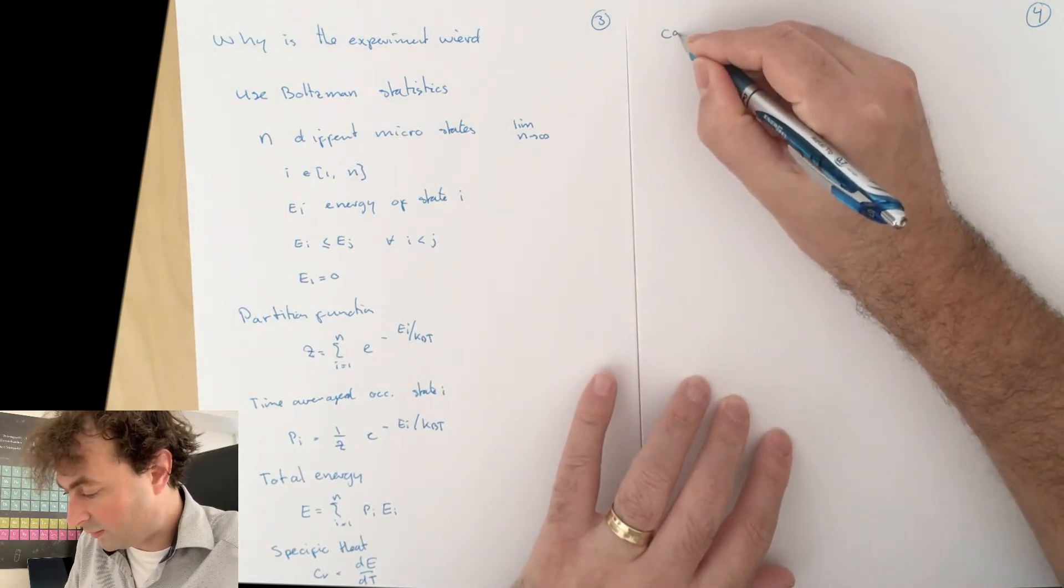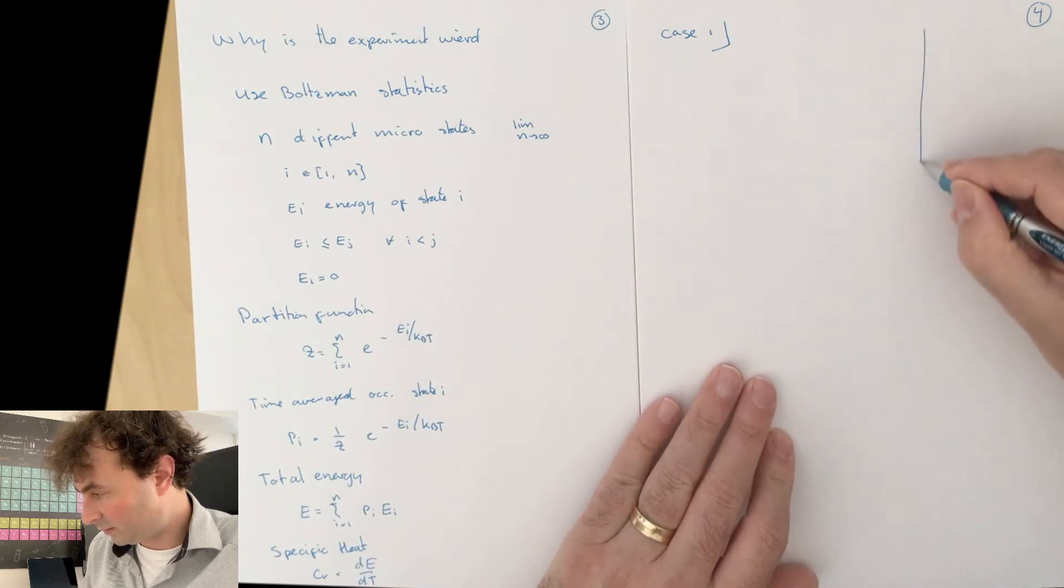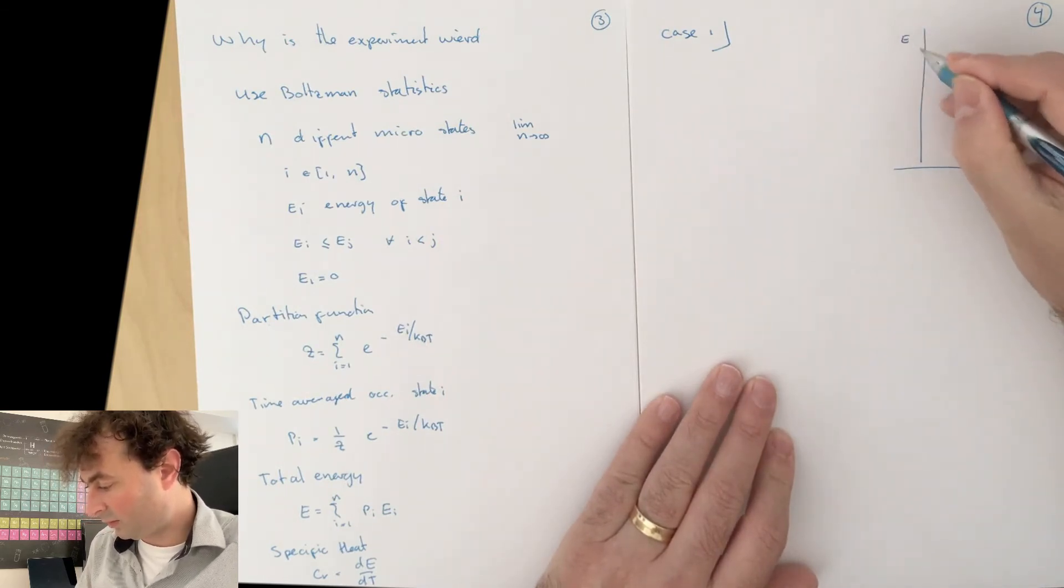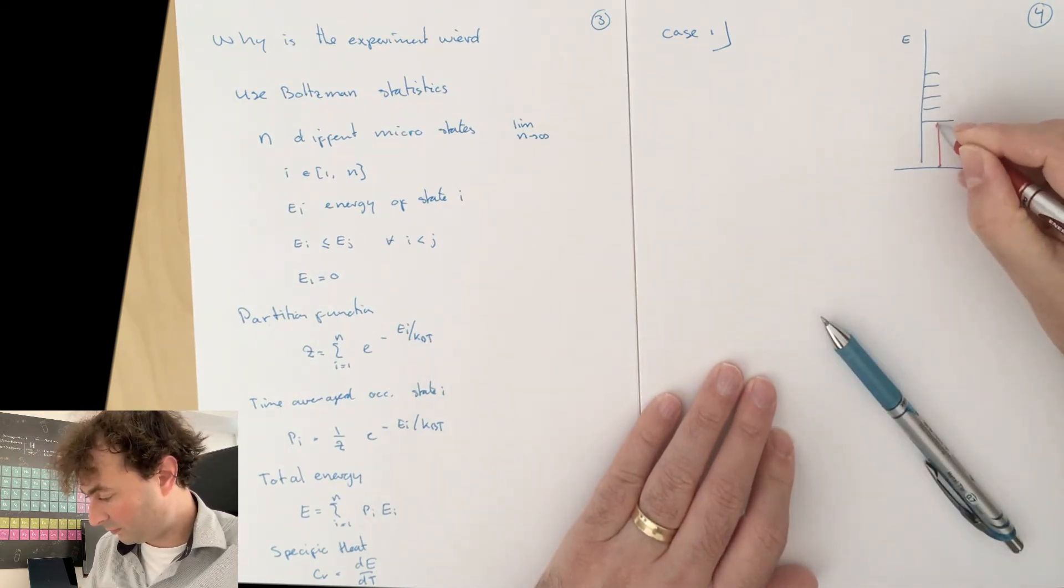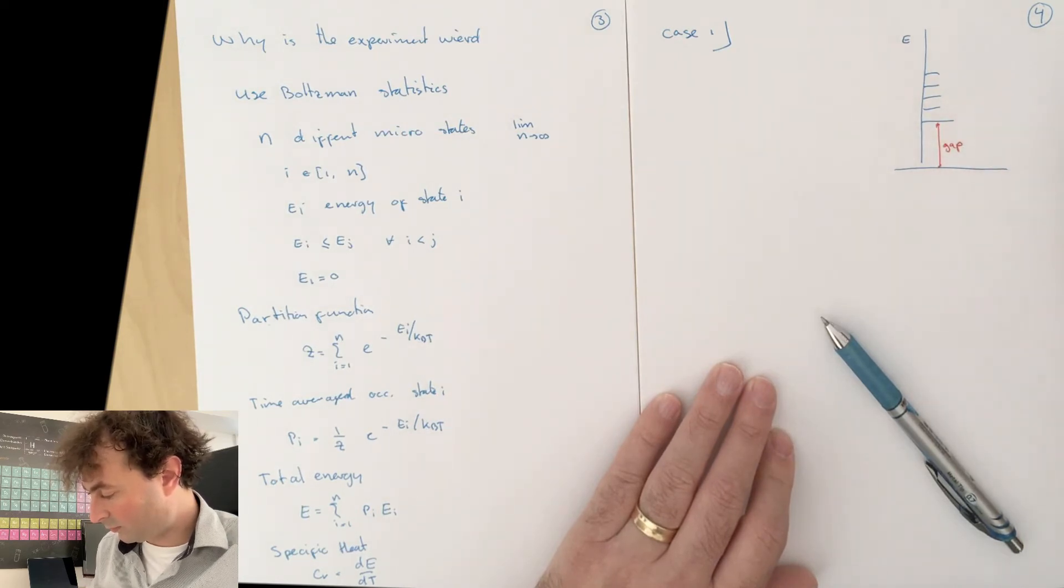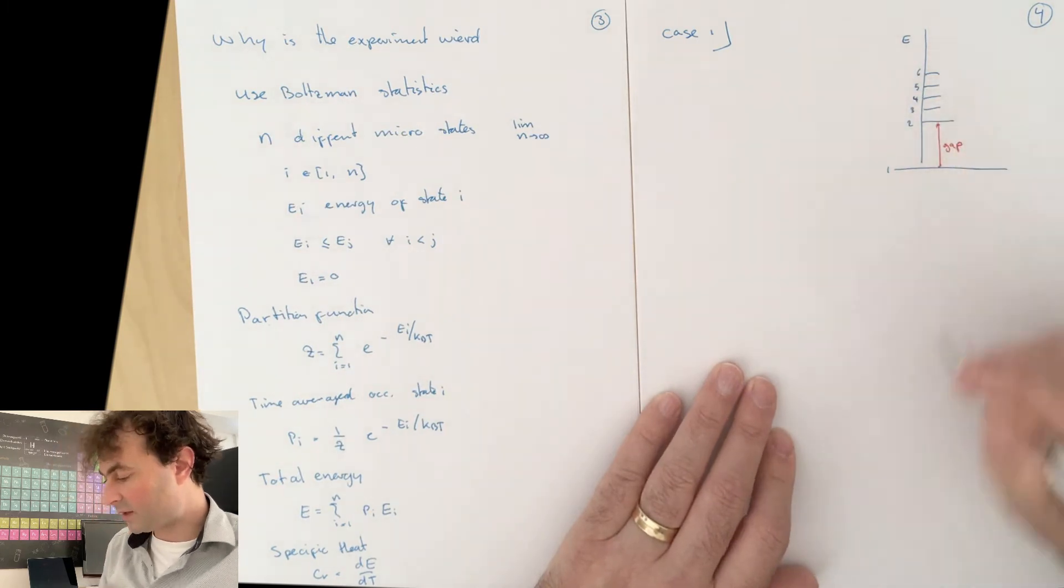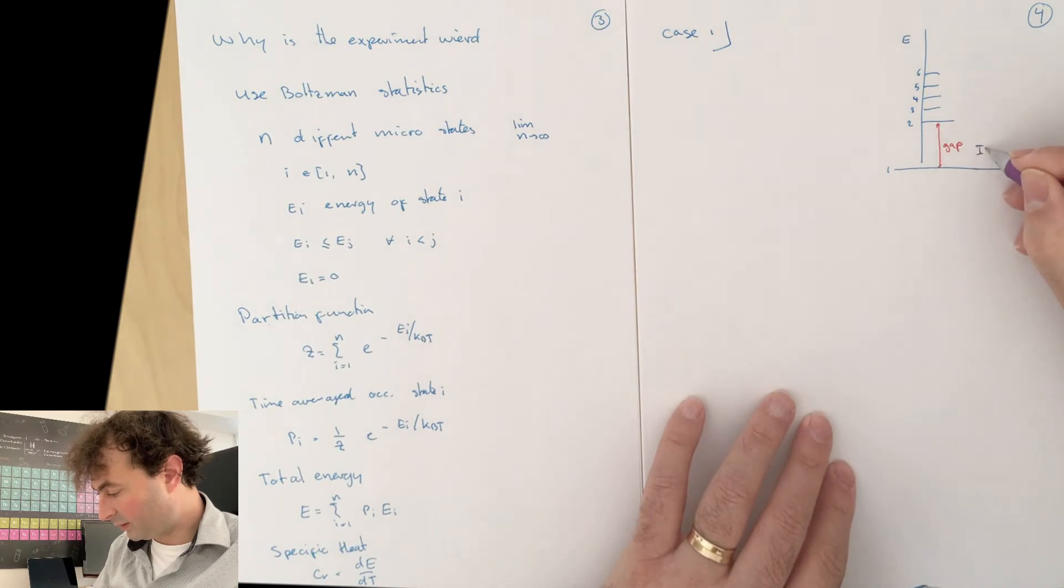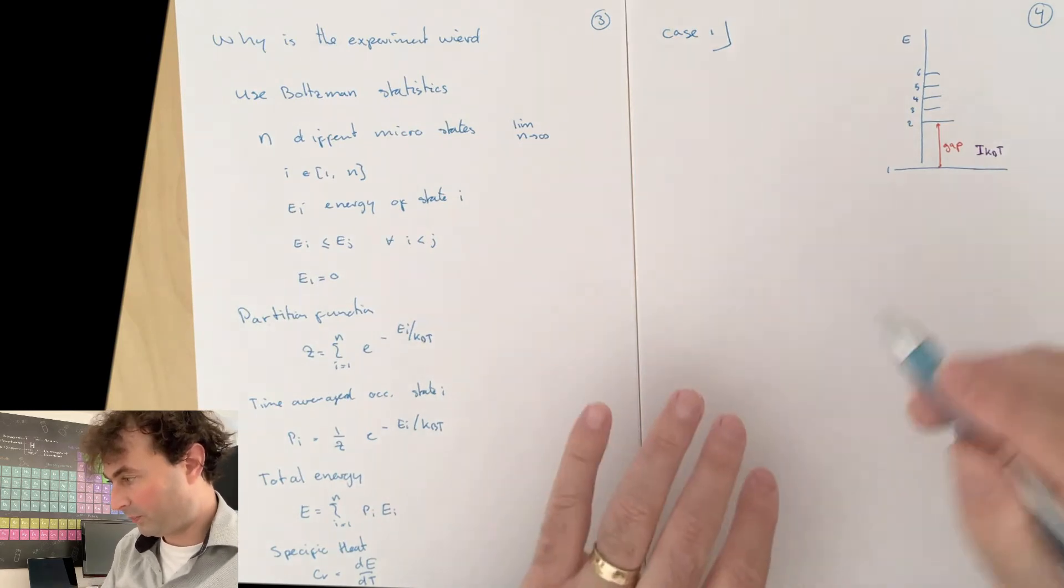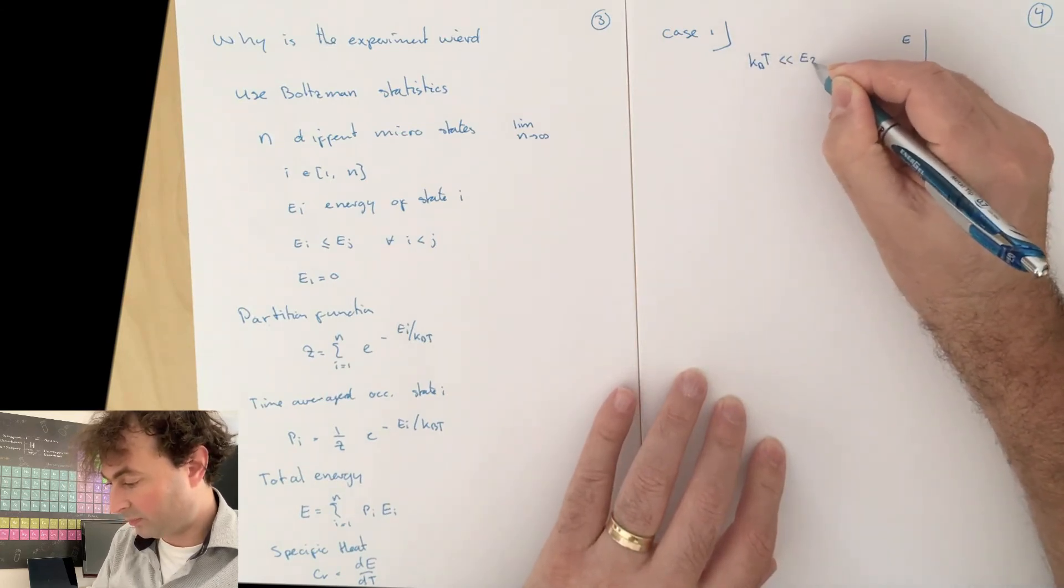Let's have a look at two different cases. In the first case, I'm going to take a system where I look at my energies and I have a set of states with a gap. So this is state 1, 2, 3, 4, 5, 6, etc. And there is a gap. I'm going to take the limit where my temperature is small compared to the gap, so k Boltzmann T is much smaller than E2.